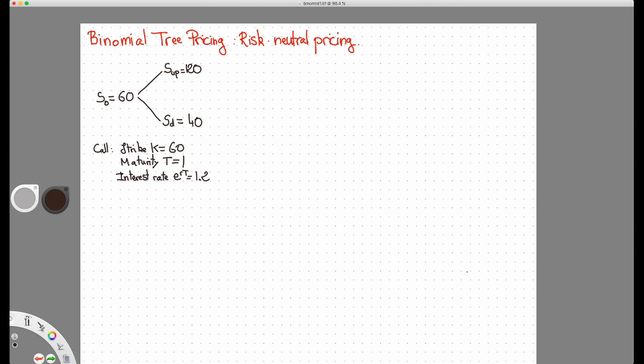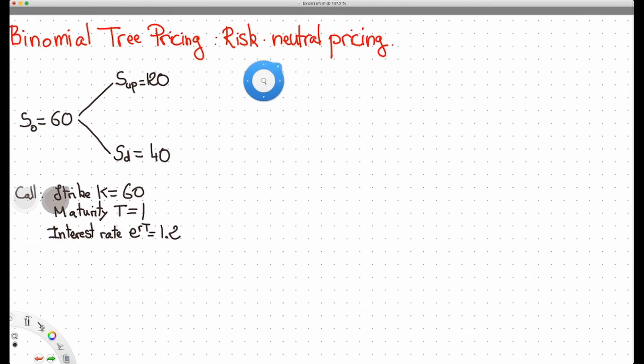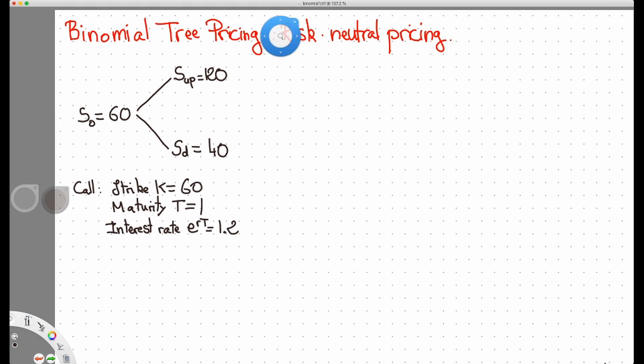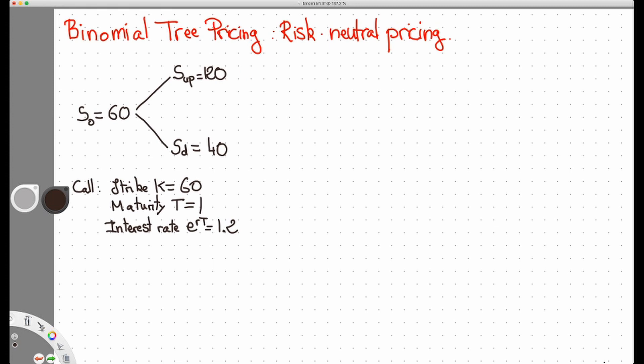These are the parameters of the problem. Now what I want to do is to use risk-neutral pricing to actually find the price of my call option. I'm going to remind you of the method that we use in class. We have seen that the price of a call is equal to the present value of its expected payoff at maturity.